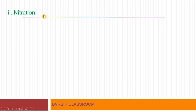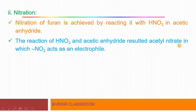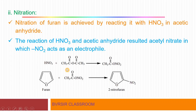Next is nitration — the replacement of hydrogen by a NO2 (nitro) group. For the nitration reaction, the reagents required are nitric acid (HNO3) and acetic anhydride. First, nitric acid and acetic anhydride react to form acetyl nitrate. The NO2 from acetyl nitrate acts as the electrophile and attacks at the second position through electrophilic substitution. The product formed is 2-nitrofuran.